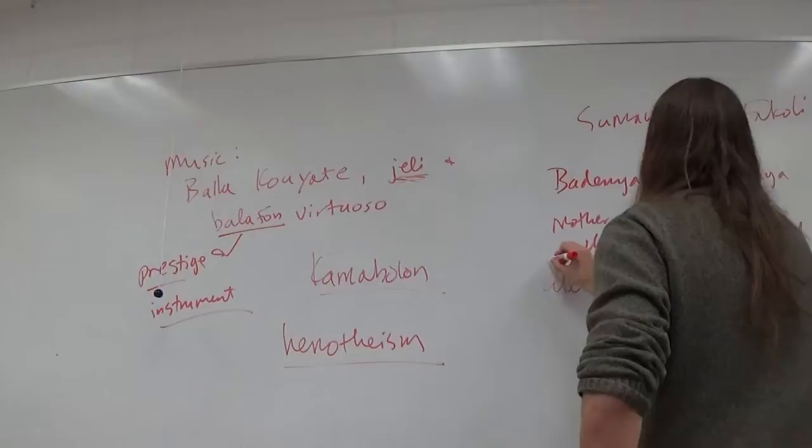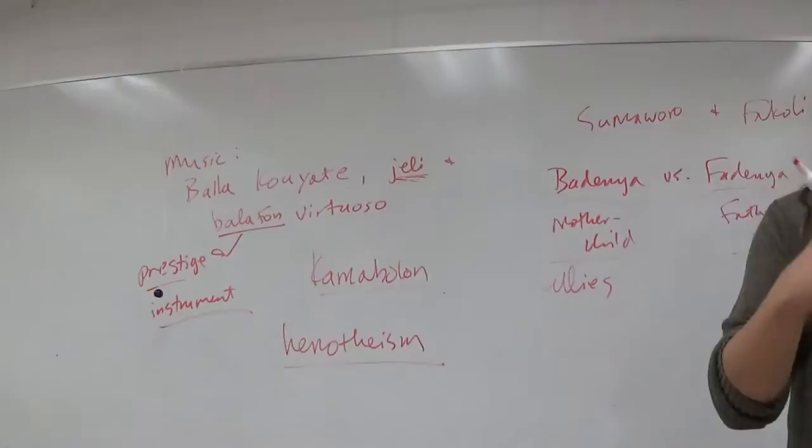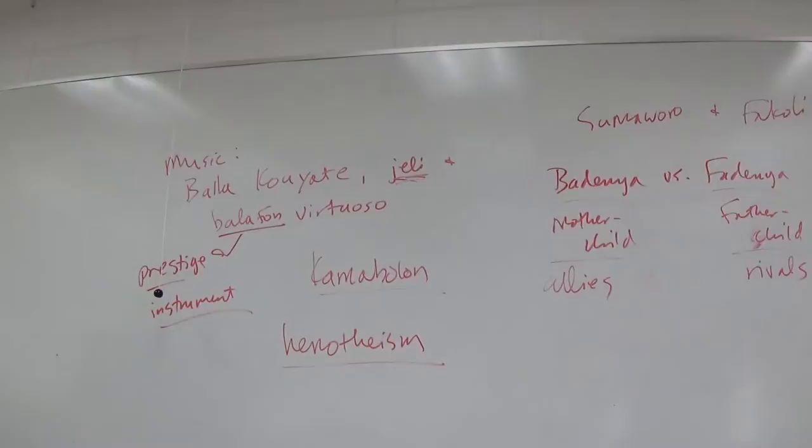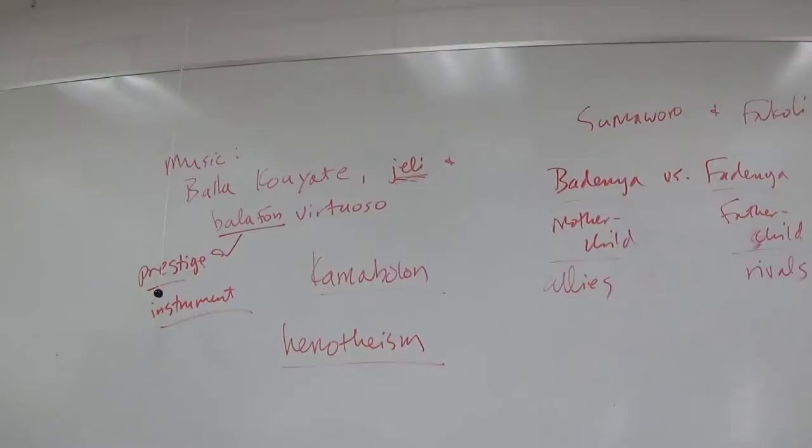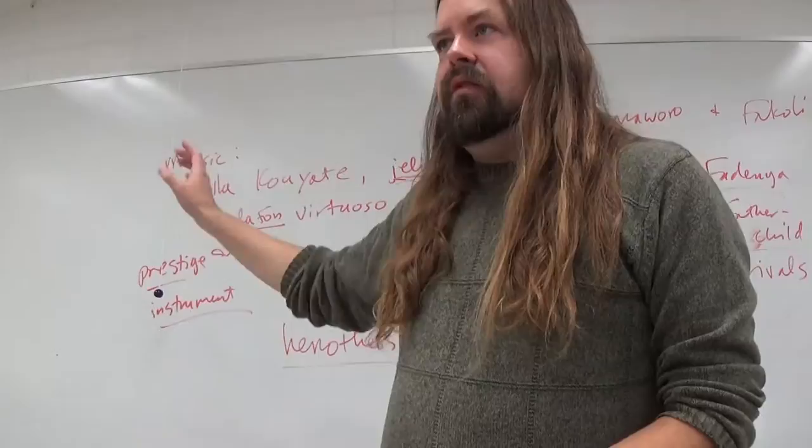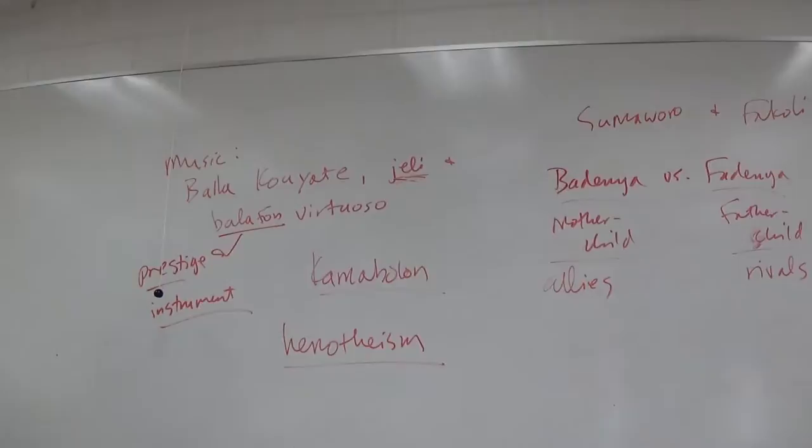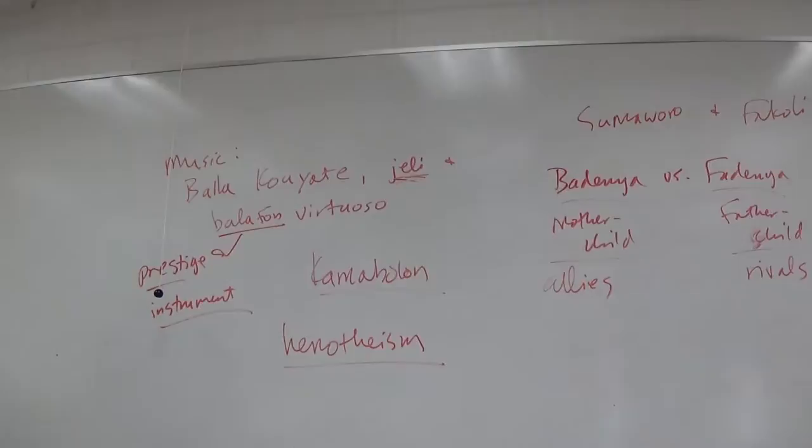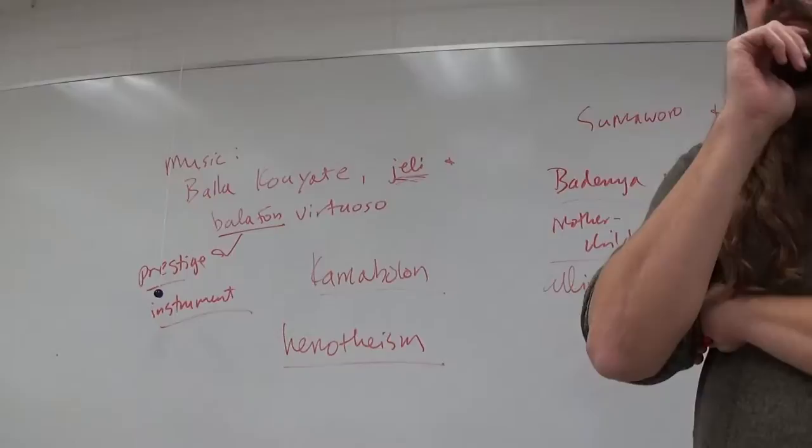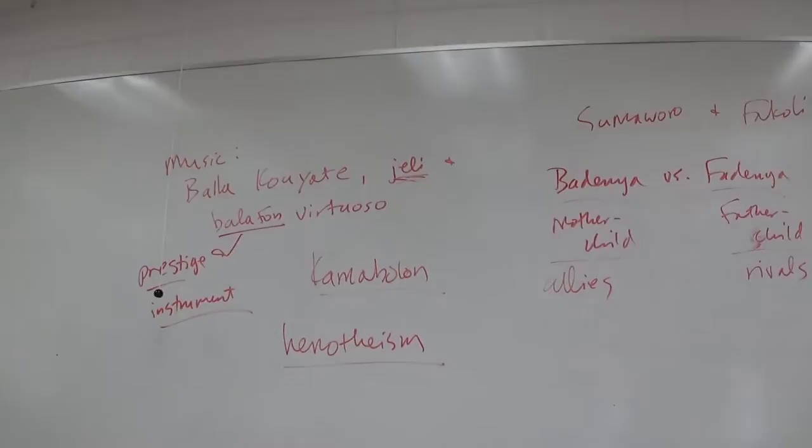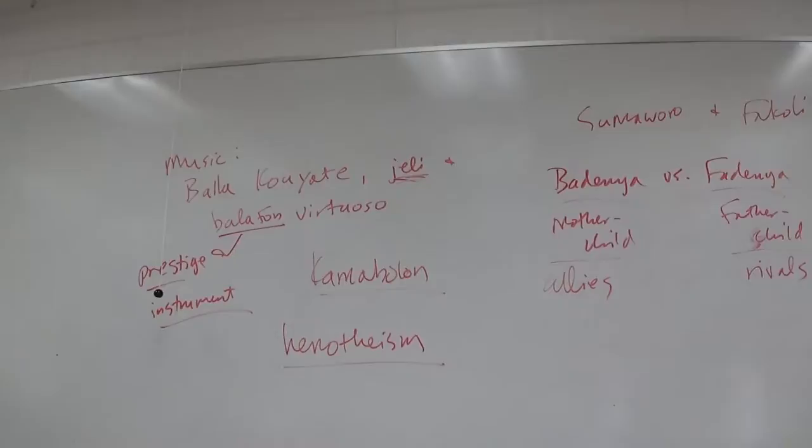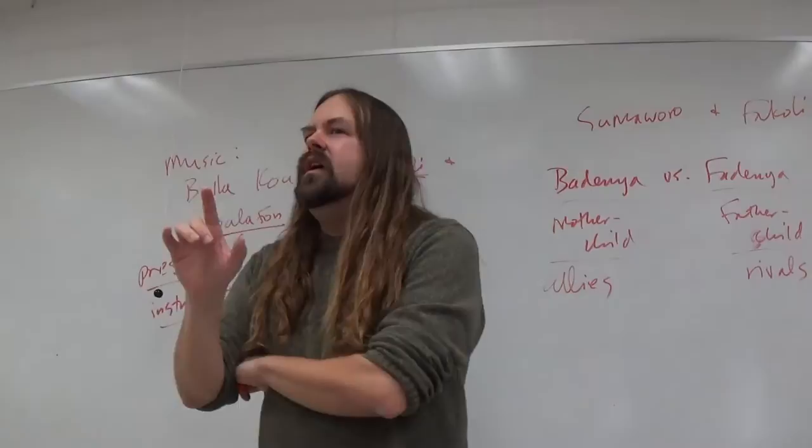So because Fakoli's mother and Sumo Waro have the same mother, they should ideally be allies. They're supposed to work together. That's why Fakoli initially won't join Sunjata's army. It's like, no, this particular kinship tie is too important, is too strong. I have to fight with my uncle rather than with you. But Sumo Waro then goes and violates that kinship tie by taking away Fakoli's wife. So Sumo Waro is Fakoli's uncle? Yes.